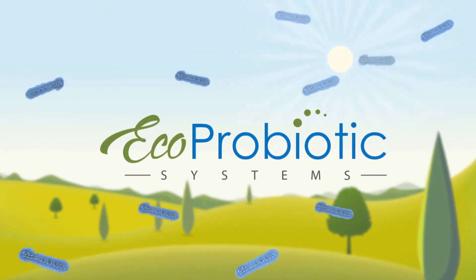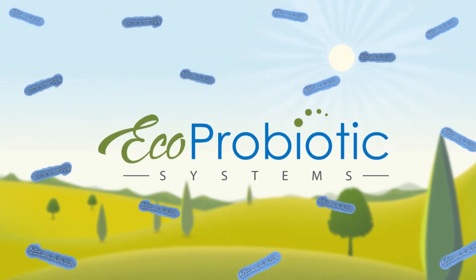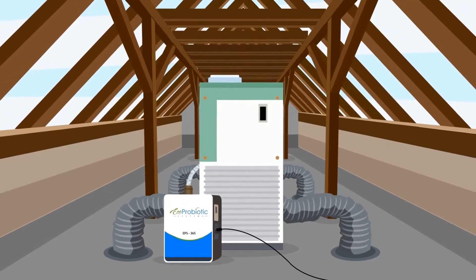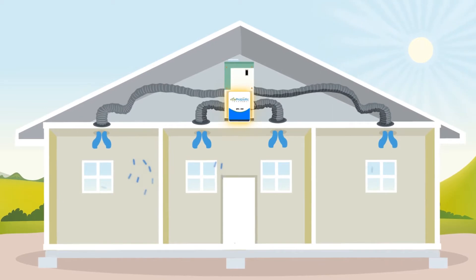Eco-Probiotic Systems is the only way to enrich your environment with the right probiotics by installing our EPS365 machine in the attic or area where the main HVAC handler is.